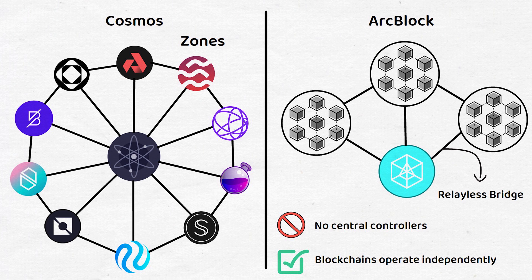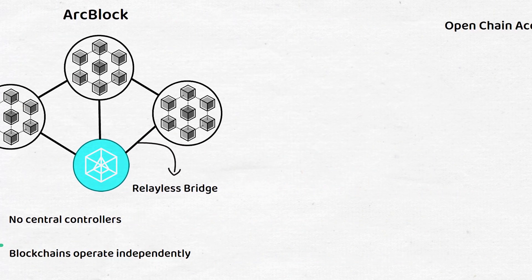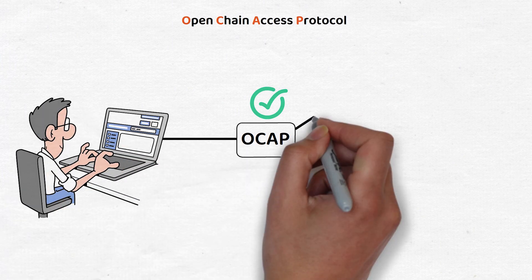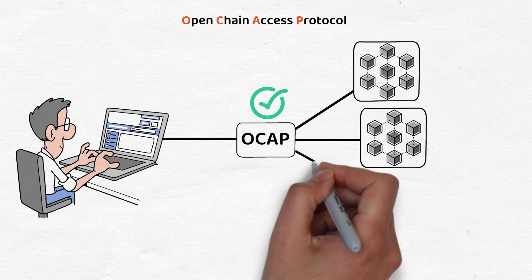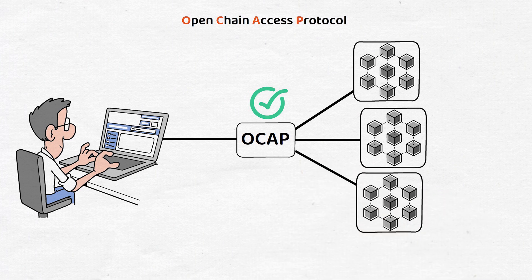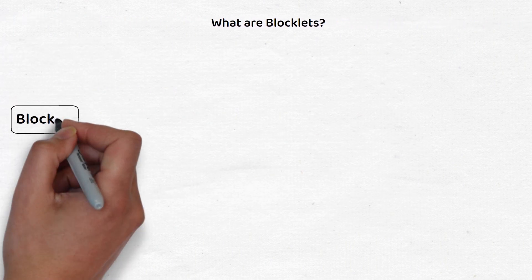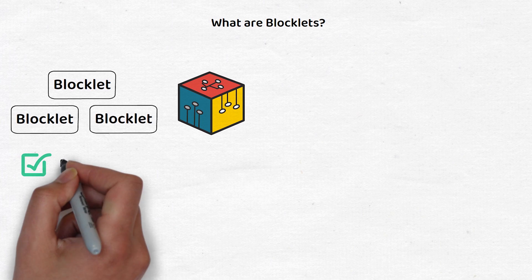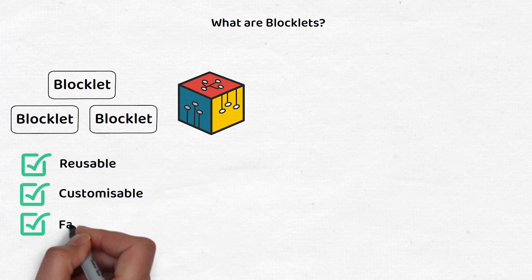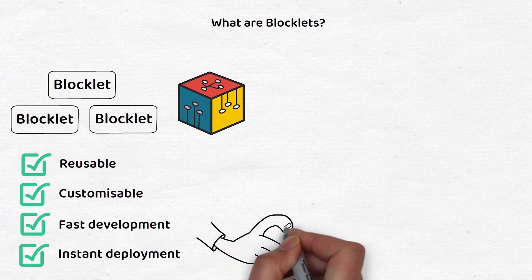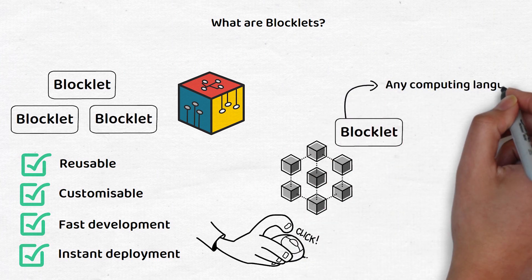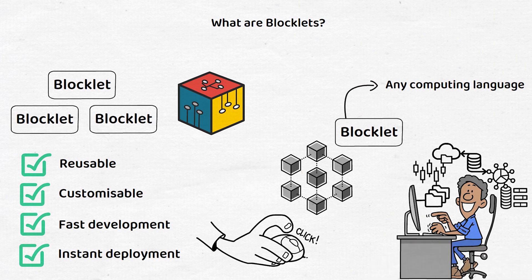Additionally, one of the more unique concepts coming from ArcBlock is the Open Chain Access Protocol, or OCAP. By enabling OCAP, developers can gain access across many blockchain protocols, giving them complete freedom to utilize whichever platform best serves their needs. Another key component of the ArcBlock platform is blocklets. Blocklets are simply software components that build applications. These blocklets are reusable and customizable for fast development and instant deployment within any platform the developer chooses. Blocklets also allow for the use of any computing language, which gives developers more flexibility and frees up their time to program rather than learn a new coding script.